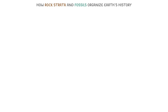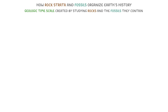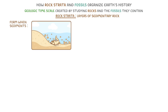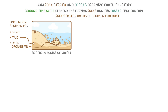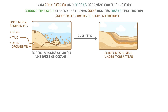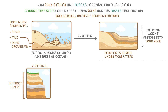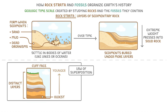Next, let's take a look at how rock strata and fossils help us to organize Earth's history. The geologic timescale was created by studying rocks and the fossils they contain. Rock strata are layers of sedimentary rock that form when sediments — things like sand, mud and dead organisms — settle in bodies of water like lakes or oceans. Over time, these sediments get buried under more layers, and the extreme weight presses them into solid rock. Whenever you look at a cliff face, you can see distinct layers stacked on top of each other. The bottom layer is the oldest, and each layer above it is progressively younger. This principle is called the law of superposition.